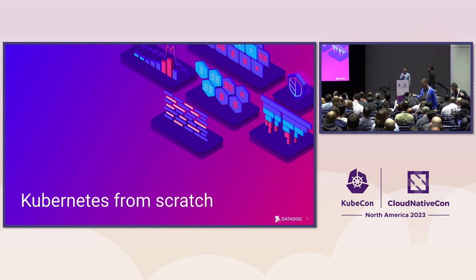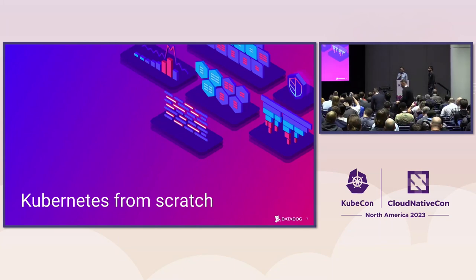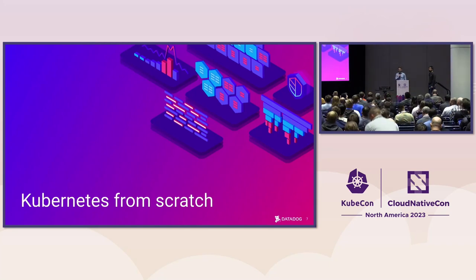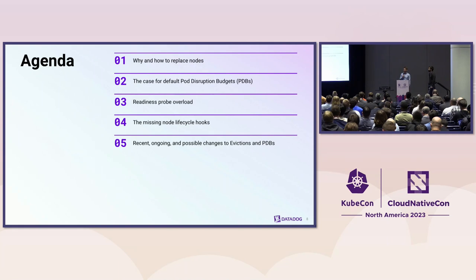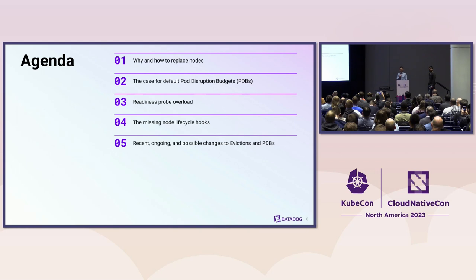Part of our duties as cluster operators is to replace nodes when needed. At our scale, this happens thousands of times a day, and we do that without breaking applications. If you use a managed distribution, you may not fully control when nodes need to be replaced, but you are responsible for protecting your workloads when that happens. Today we'll explain why nodes need to be replaced, how it's done generally and more specifically at Datadog, and we hope to start a conversation on turning some of those strategies into Kubernetes enhancements.